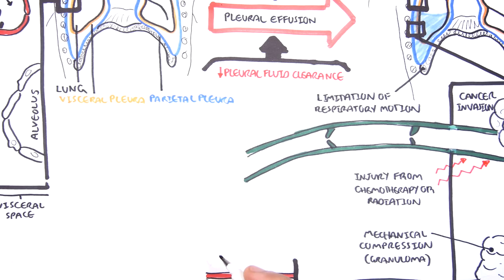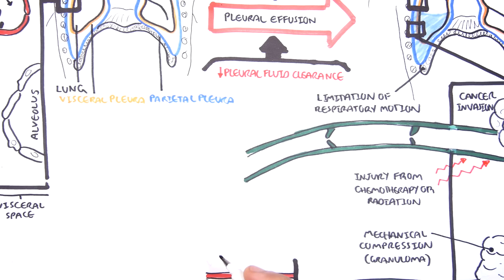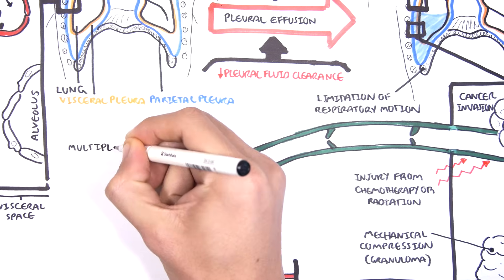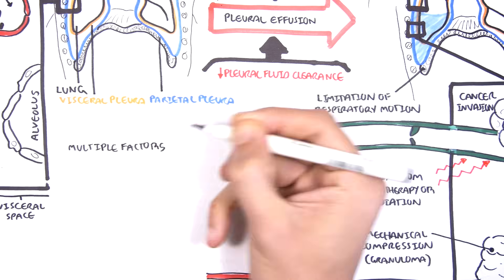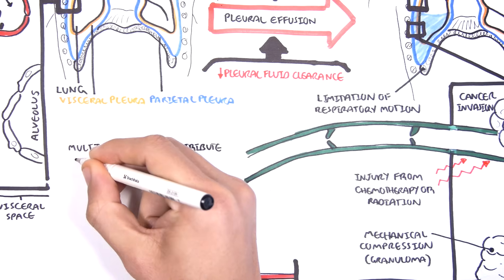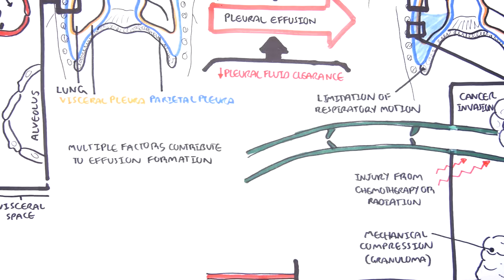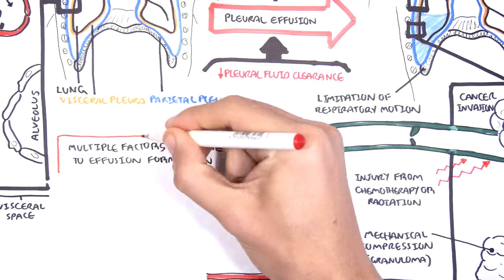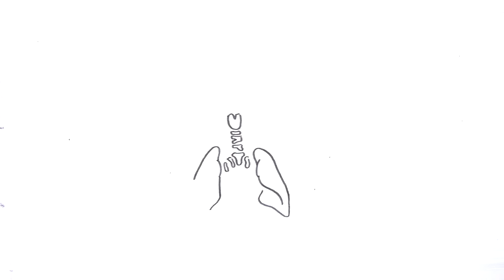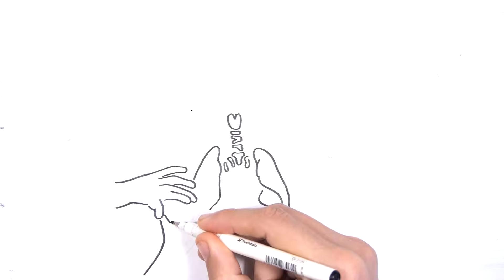The two main mechanisms of pleural effusion are increase in fluid formation and decrease in fluid clearance, and we learned a few examples of each. It's very important to know that pleural effusions don't occur from a single factor; usually multiple factors contribute. Pleural effusions usually present with an underlying disease, such as pneumonia.